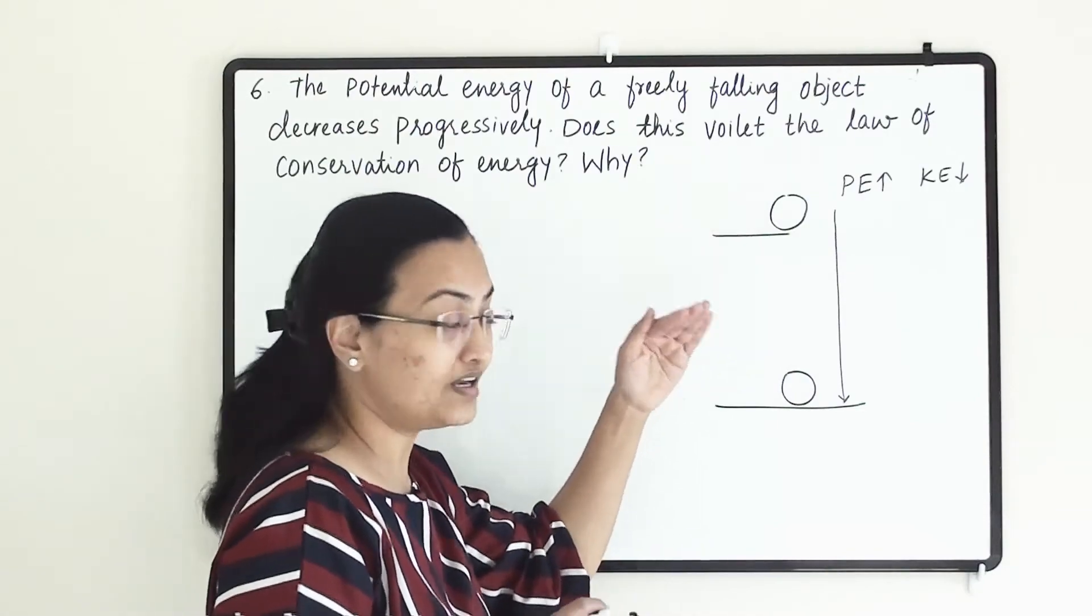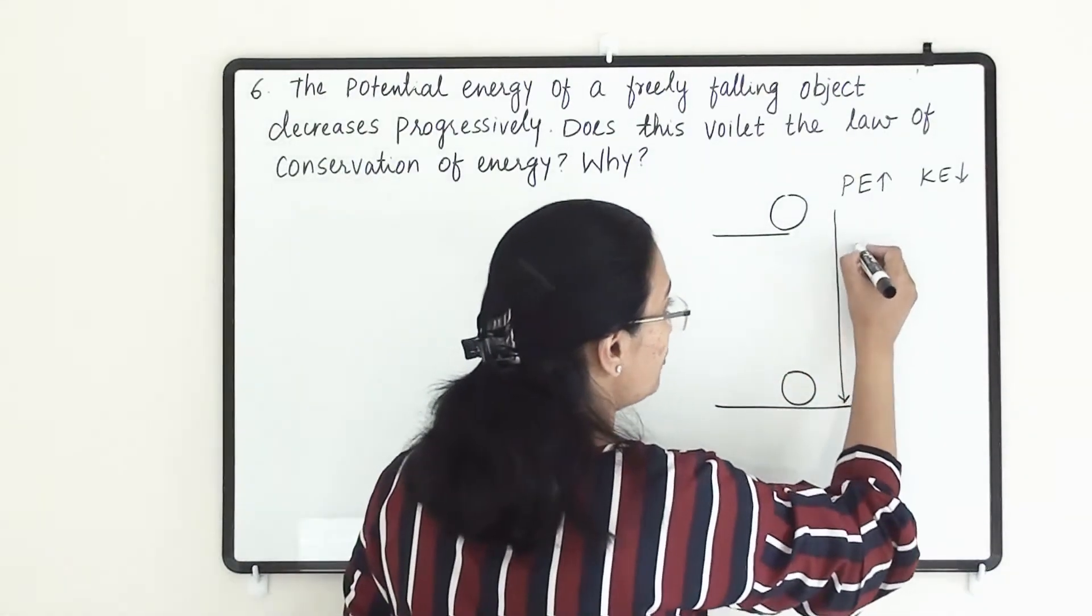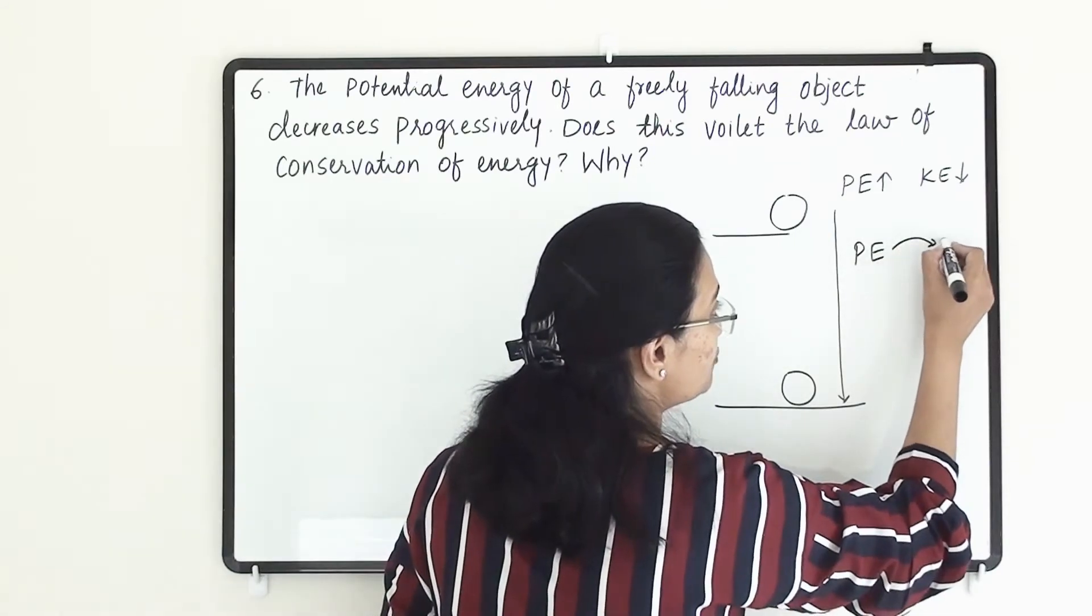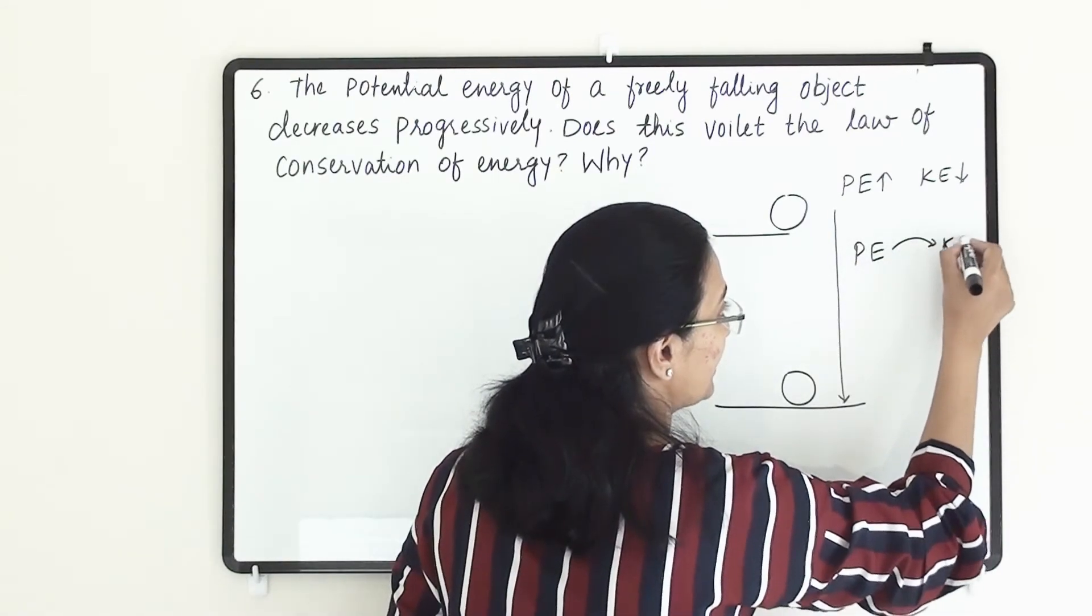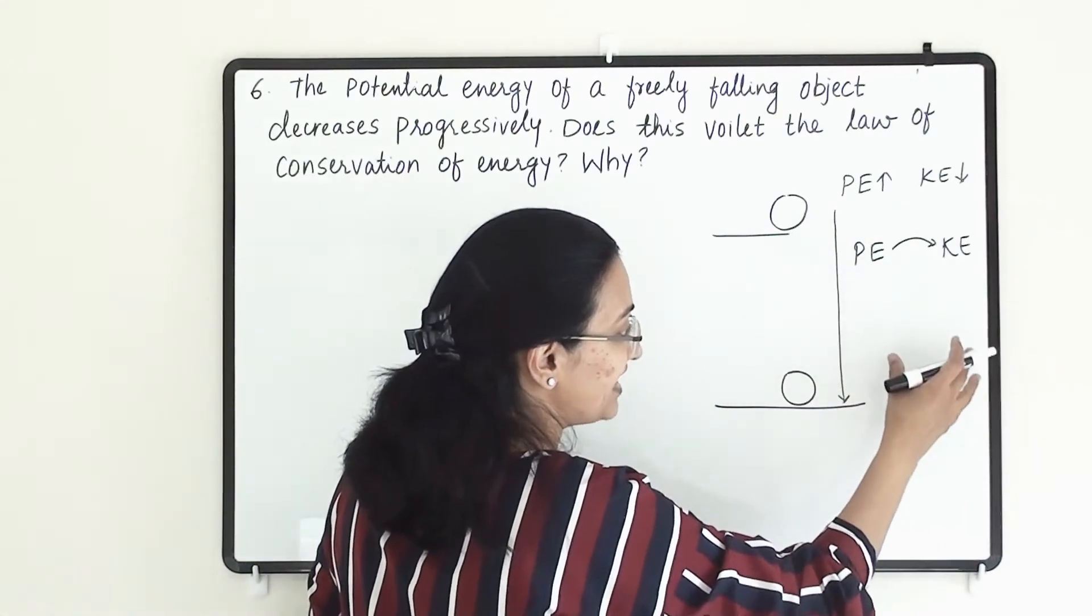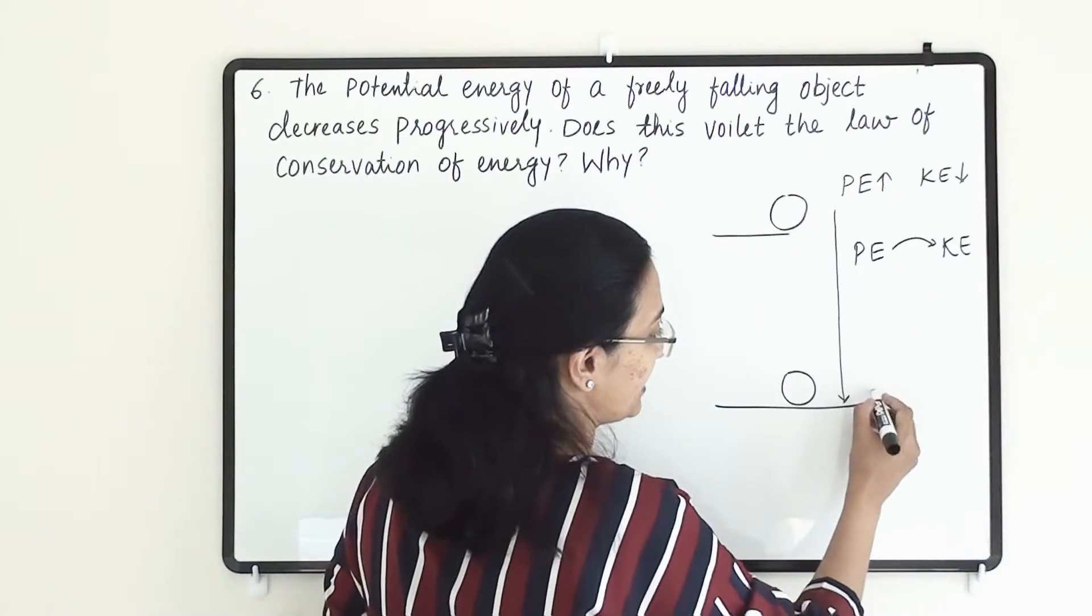When the ball starts to fall, its potential energy begins to convert into kinetic energy. As it comes down, almost all the potential energy converts into kinetic energy.